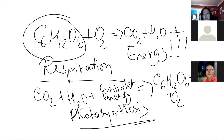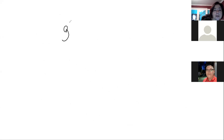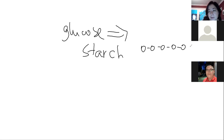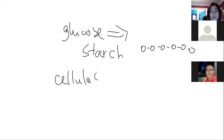You rarely find free glucose as-is in nature. Plants store glucose primarily as starch — starch is literally a polymer of glucose. Glucose can also be used by plants as a structural building molecule called cellulose, which provides structural support.